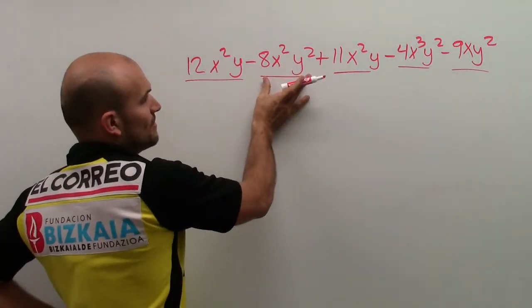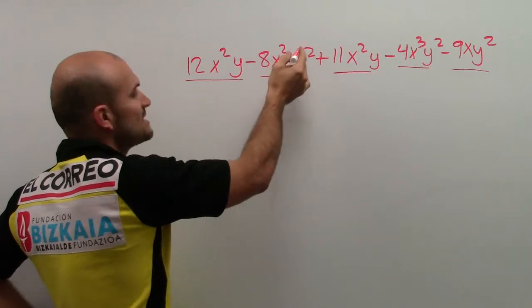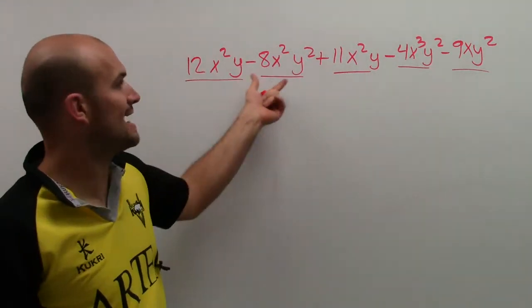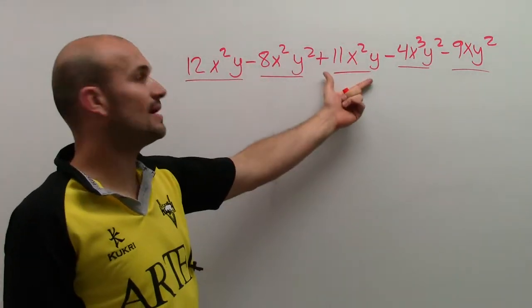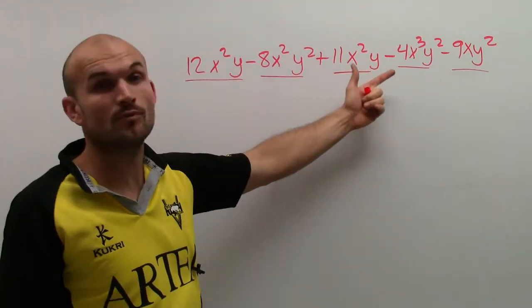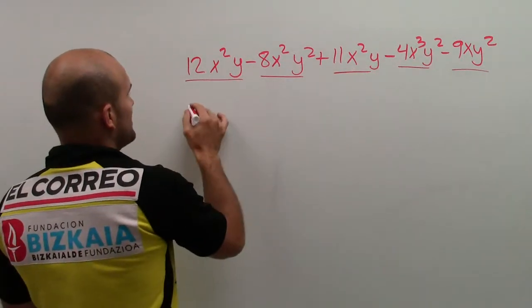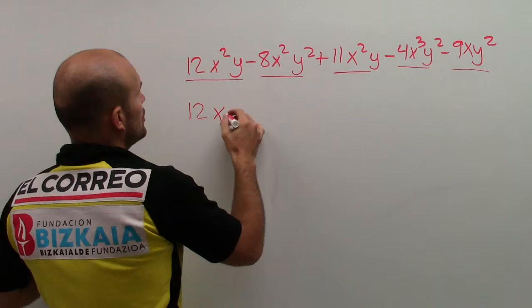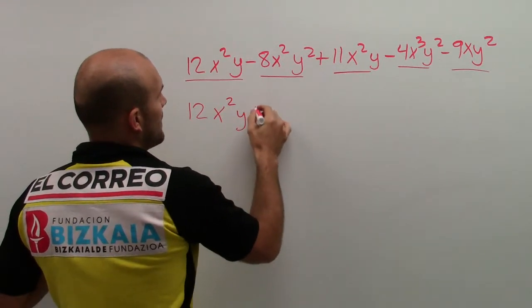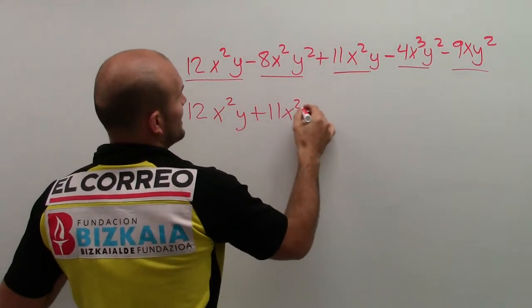So I look over to my next term. This has an x squared and a y squared. Since it's not the same, I cannot combine these two. Here, I actually do have a match. I have x squared and y. So therefore, what I'm going to do is rewrite these next to each other: 12x squared y plus 11x squared y.